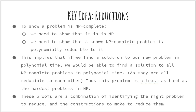This brings us to an interesting junction. To show that a problem is NP-complete, we need to show two things: one, that it is in NP, and second, that a known NP-complete problem is polynomially reducible to it. This implies that if we found a solution to a new problem in polynomial time, we would be able to find a solution to all NP-complete problems in polynomial time, since they are all polynomially reducible to each other. Thus this new problem is at least as hard as the hardest problems in NP. All these proofs are a combination of identifying the right problem to reduce and the constructions needed to make the reduction.